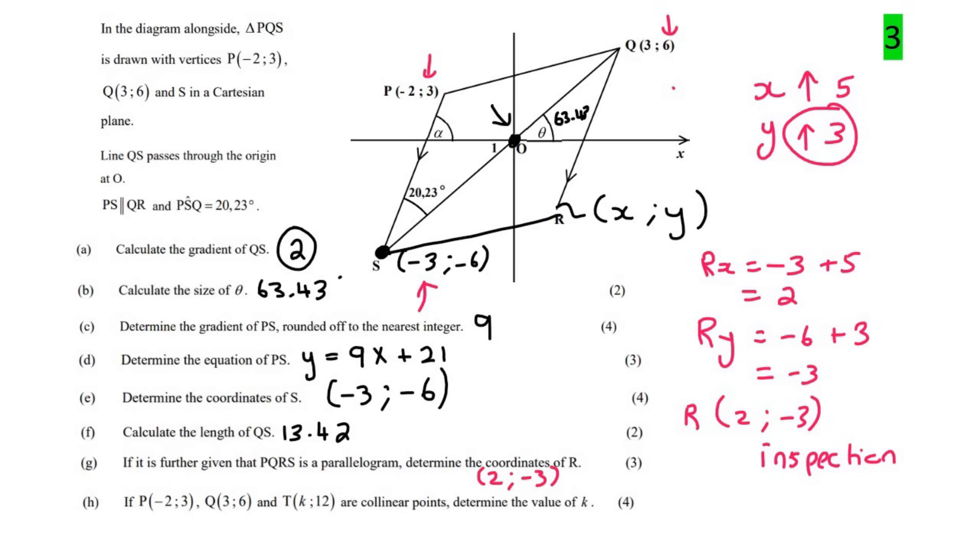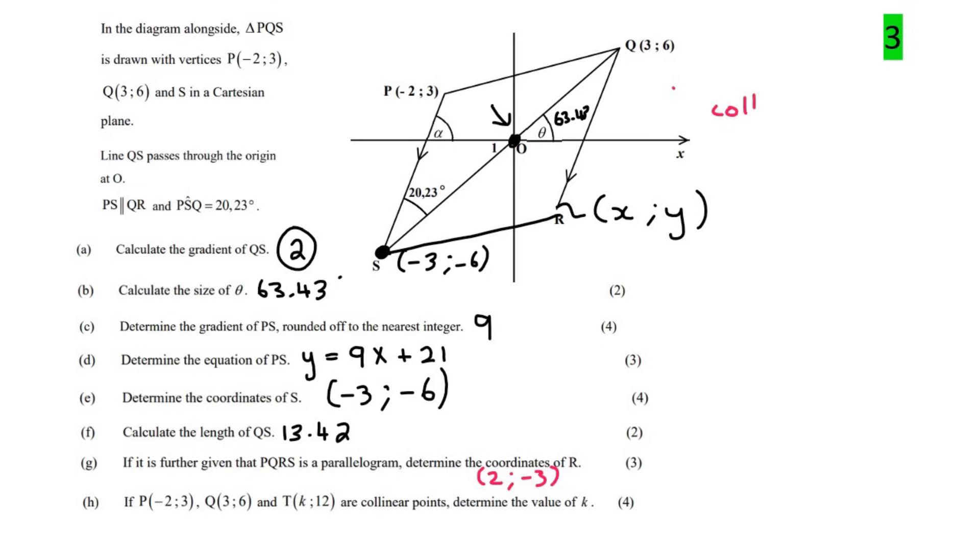And the last question. If P, which is minus 2 and 3, Q, which is 3 and 6, and T are collinear, determine the value of K. When points are collinear, it means that they have the same gradient. Okay, so let's write that. Collinear points have the same gradient.